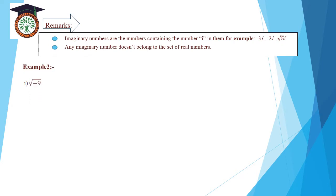Example 2: square root of negative 1 equals i. And square root of negative 9 equals 3i.